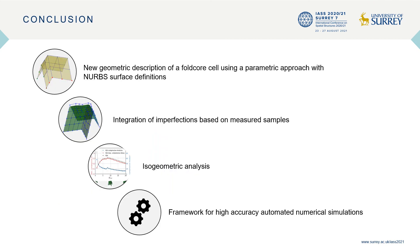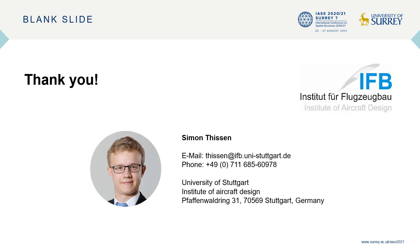To sum it up, we developed a new simulation process for folded sandwich structures with consideration of imperfections. For that, first a new geometry description using NURBS patches was introduced. Then the imperfections were measured and mapped onto the model. With this, the isogeometric analysis could be performed, showing good agreement to real test data. The whole process is fully automated and can be integrated in optimization tools or similar, which gives us a framework for high-accuracy automated numerical simulations. Thank you very much for listening, and if you have any questions, feel free to ask them or contact me.